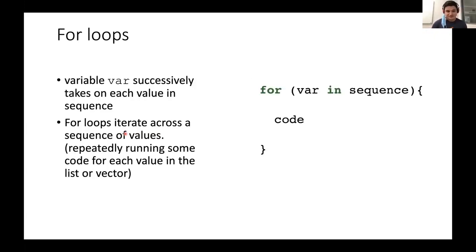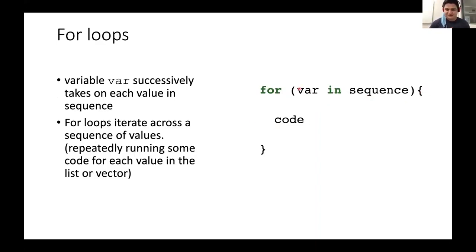We're going to start with for loops. For loops are used to run code over many variables or values in a sequence. They're written as: for (variable in sequence), then your code goes inside the brackets. Your sequence can be a vector, a list, or another R object. The variable — written as 'var' — is a new variable you create inside your code block that takes on each value in the sequence.